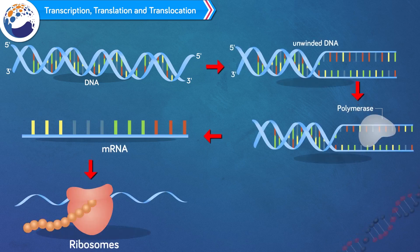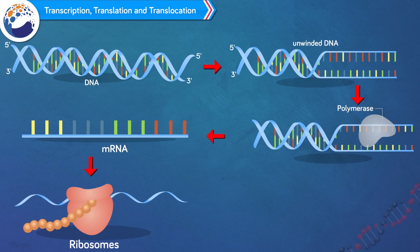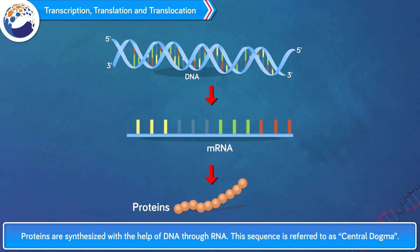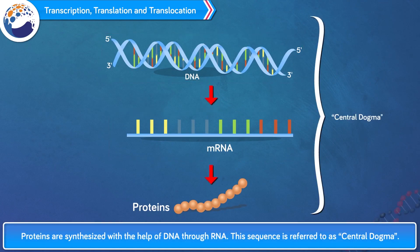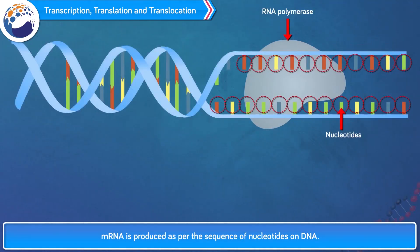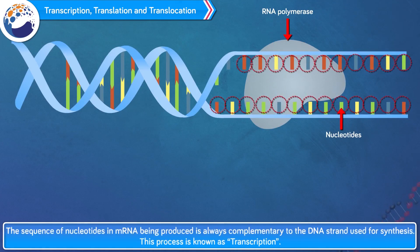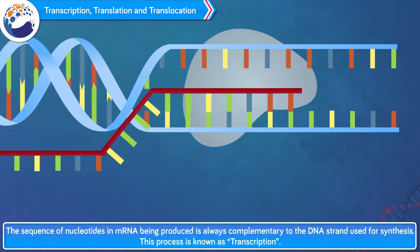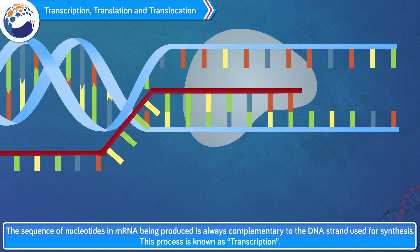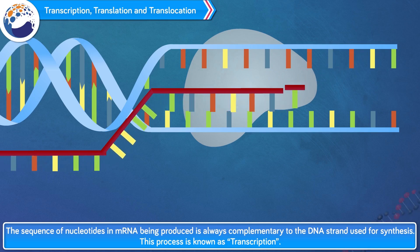The instructions to make proteins are present in DNA — deoxyribonucleic acid — and synthesis of an appropriate amount of proteins is necessary for the functioning of the body. Proteins are synthesized with the help of DNA through RNA. This sequence is referred to as the central dogma. mRNA is produced as per the sequence of nucleotides on DNA, and the sequence of nucleotides in mRNA being produced is always complementary to the DNA strand used for synthesis. This process is known as transcription.